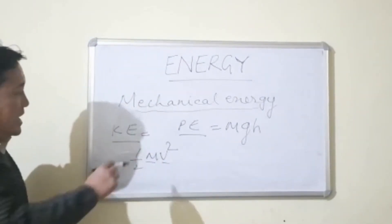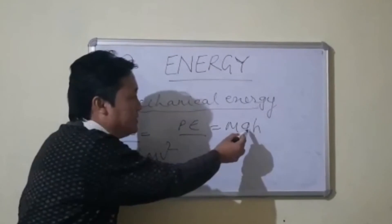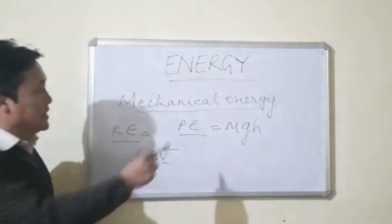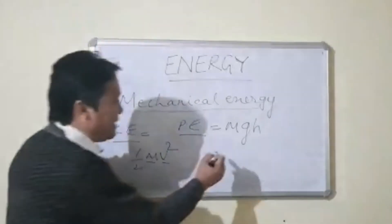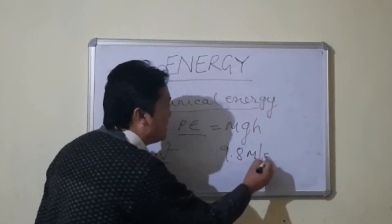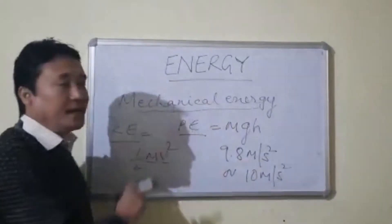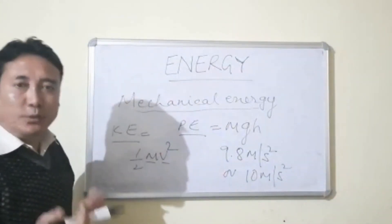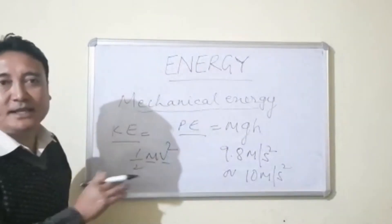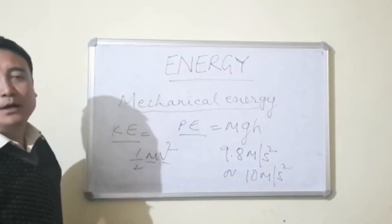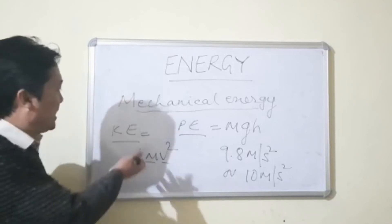Potential energy is given by mass into acceleration due to gravity into height, so potential energy is directly proportional to the mass, height of the body, and acceleration due to gravity. The value of acceleration due to gravity is 9.8 meters per second squared, or approximately 10 meters per second squared. A body possesses potential energy when it is in the state of rest, while a body in the state of motion possesses kinetic energy. Examples of kinetic energy include a moving aeroplane, a moving ball, a running person, and flowing water.